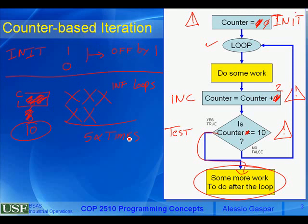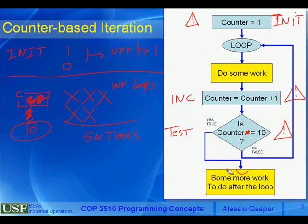This series of examples shows how much rigor it takes to write a correct loop. You need to carefully choose the initialization, the incrementation, and the test. We illustrated how important initialization and incrementation are; now let's illustrate how important the test is as well.